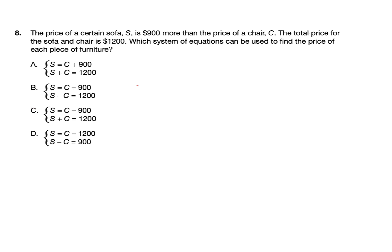Question 8 is an algebra question. This is quite high emphasis. The price of a certain sofa S is $900 more than the price of a chair C. The total price for the sofa and the chair is $1,200. Which system of equations can be used to find the price of each piece of furniture?